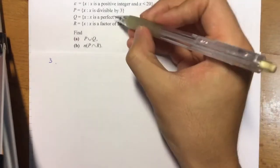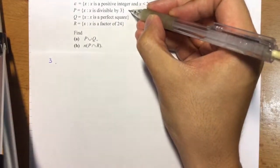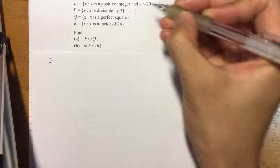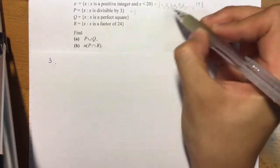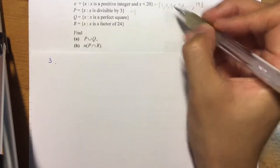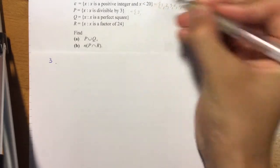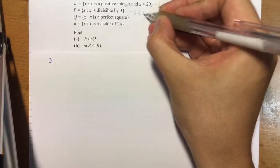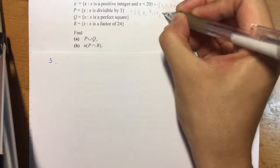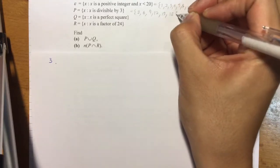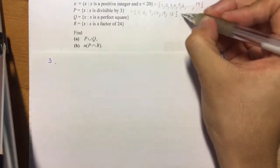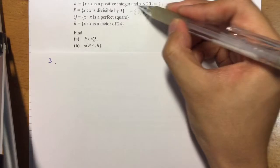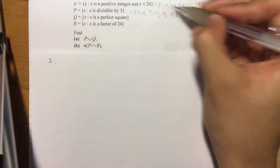Next, P is numbers divisible by 3. Bear in mind these numbers have to fall within our universal set, so we start with 3, we have 6, 9, 12, 15, and 18. We do not continue anymore because it's pointless—they don't fall in our universal set. That's our biggest boundary.